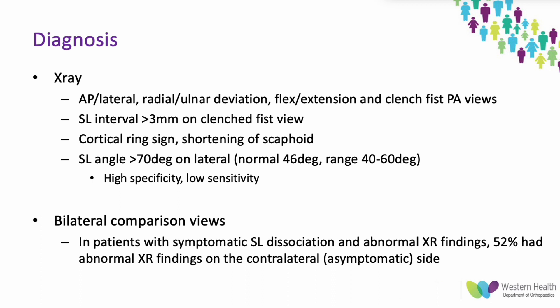Diagnosis begins with standard AP and lateral radiographs, plus radial/ulnar deviation and flexion/extension views. Clenched fist PA views assess for dynamic instability — a scapholunate interval greater than 3 mm on the clenched fist view indicates dynamic instability. Other signs on plain film include the cortical ring sign, apparent shortening of the scaphoid due to flexion posturing, and an increased scapholunate angle on the lateral image.